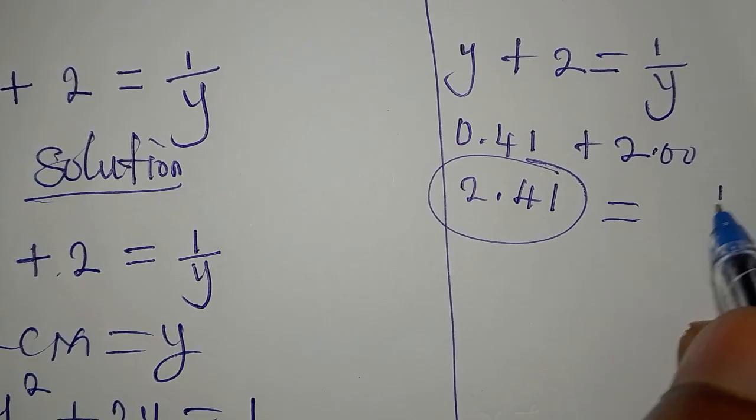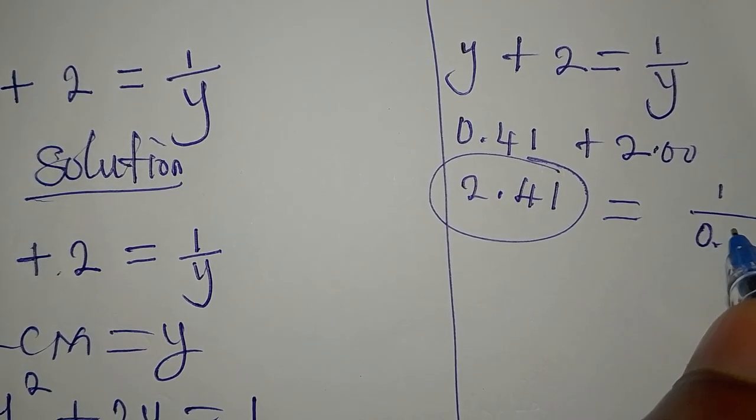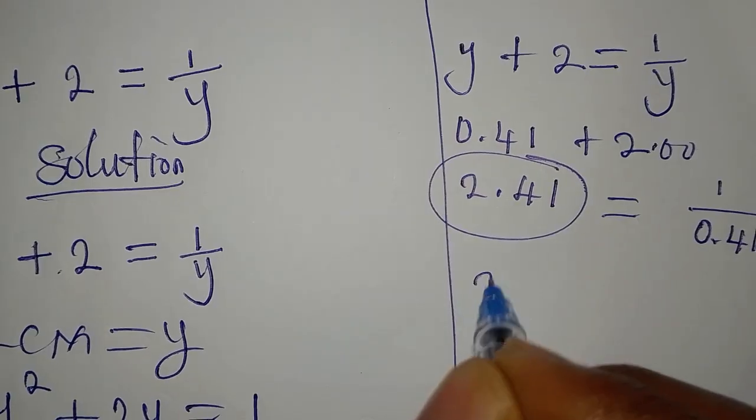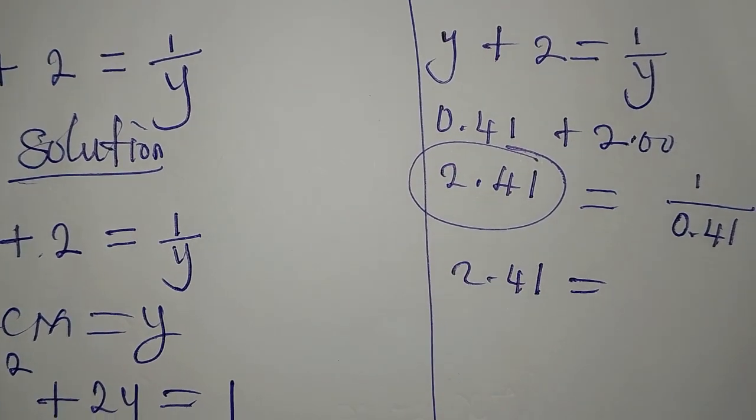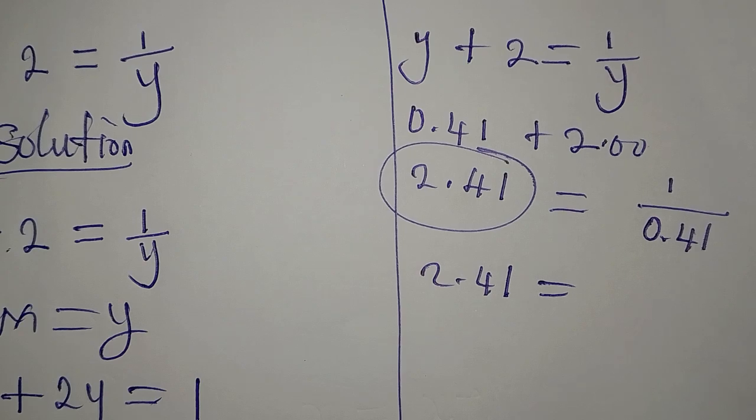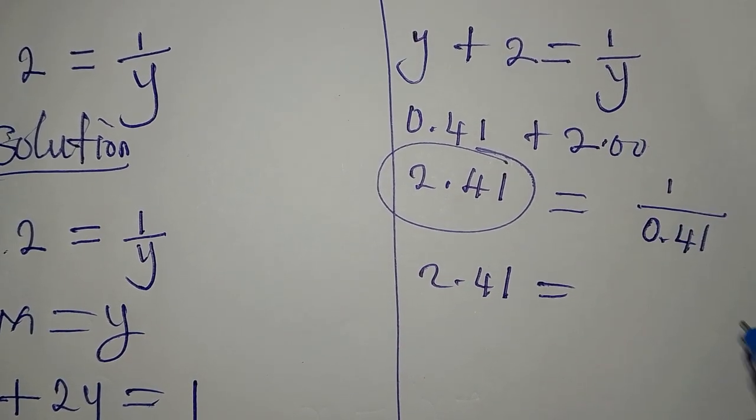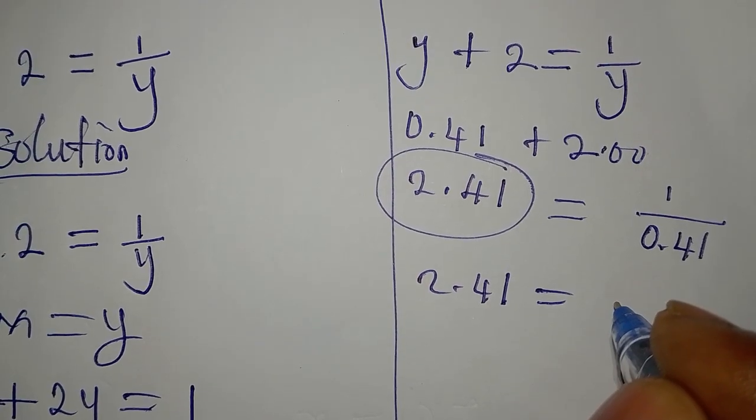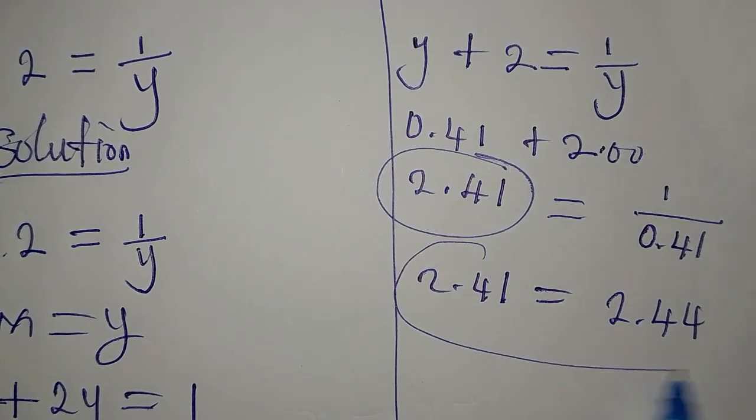Then on the right hand side, we're going to have 1 over 0.41. So 2.41 from the left is equal to, let's use calculator to get that. 1 divided by 0.41.